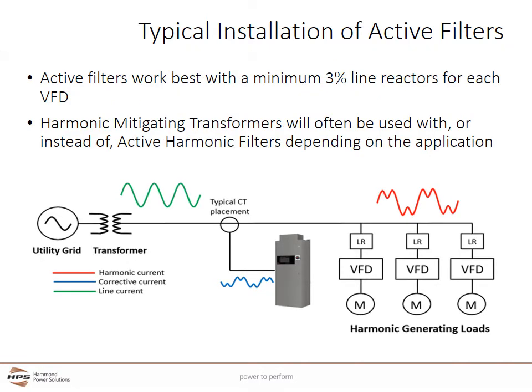Active harmonic filters work best with a minimum 3% line reactor or DC link choke for each VFD. Line reactors help lower the total harmonic current, which also aids in being able to size a lower current-rated and less expensive active harmonic filter. Harmonic mitigating transformers phase-shift harmonic currents, which can also cause harmonic current cancellation, and are most often used to cancel harmonic currents caused by single-phase harmonic sources. Multi-pulse transformers are also often used with medium-voltage drives for current harmonic mitigation. 18-pulse transformer technology is still sometimes used with low-voltage VFDs but is largely being replaced with active harmonic filters.